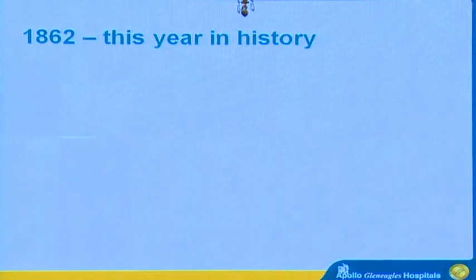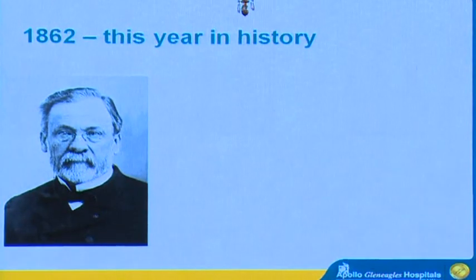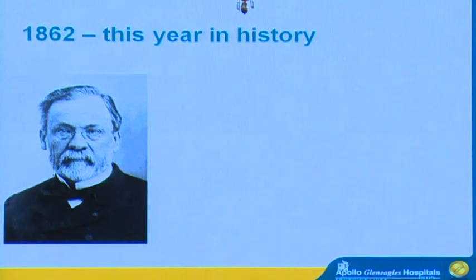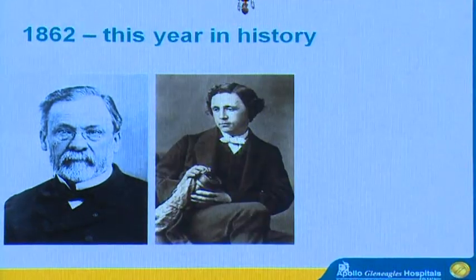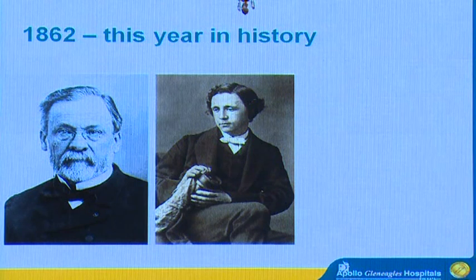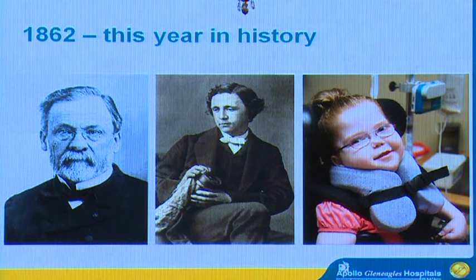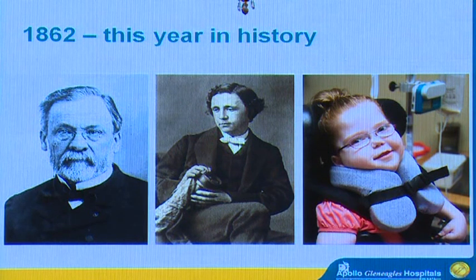We go back around 150 years, a little bit of history and maybe a little quiz. This is 1862. Can you identify this person in the slide? This is Louis Pasteur, and he discovered pasteurization in this year. And this person is another Louis — Louis Carroll — and he wrote Alice in Wonderland in this year. And it is the same year that Dr. William Little actually gave the name cerebral palsy to this group of diseases.